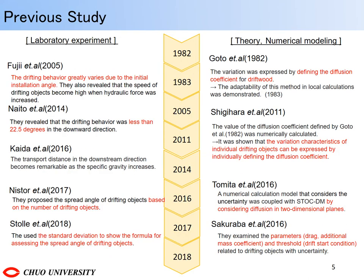Next, this is a previous study on drifting behavior. Regarding the reproducibility of the variation in drifting behavior, Gotoh et al. established a calculation method for defining the diffusion coefficient in 1982 and demonstrated its validity for the local calculation. Sugihara et al. made it possible to reproduce the unique spread of drifting objects by changing the value of the diffusion coefficient. However, due to insufficient variability reproduction, many drifting experiments have been conducted.